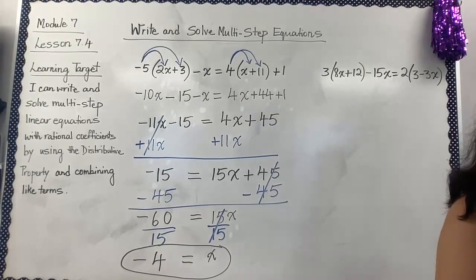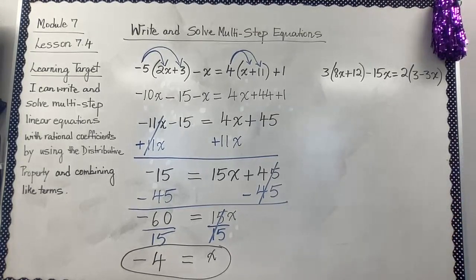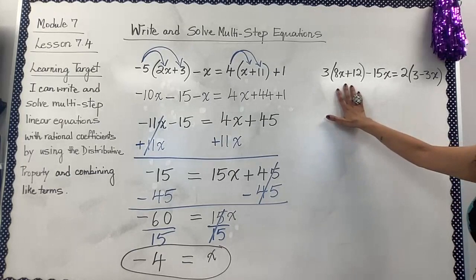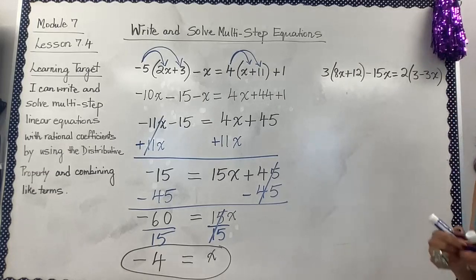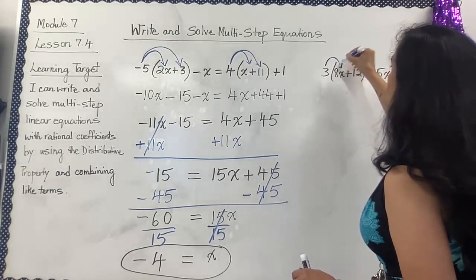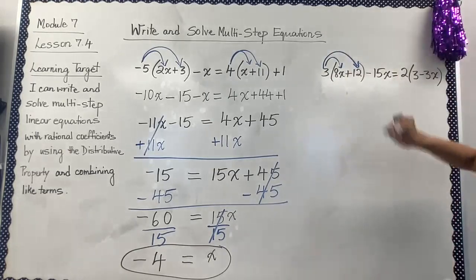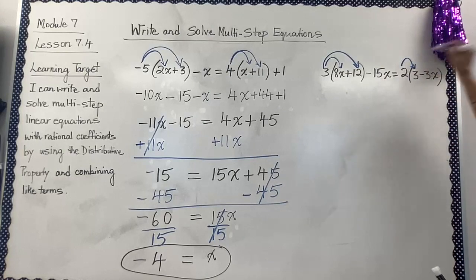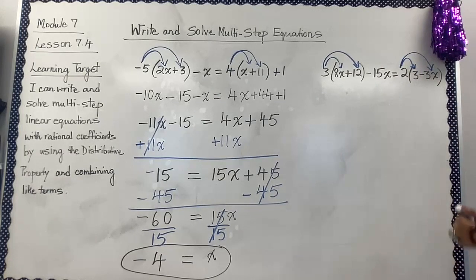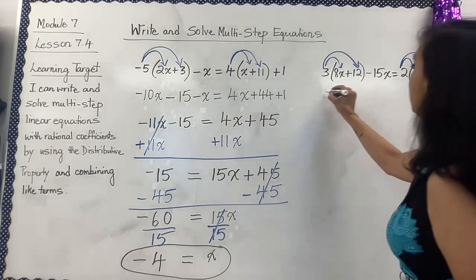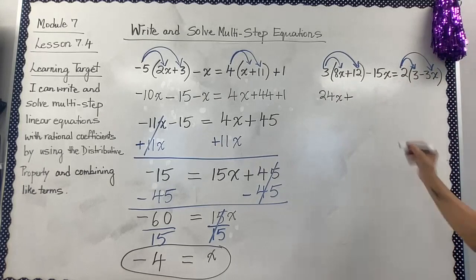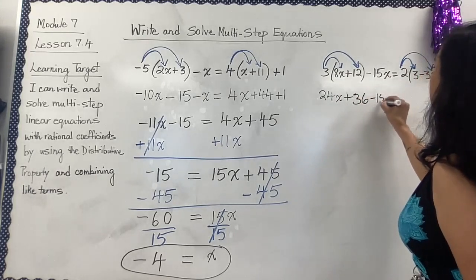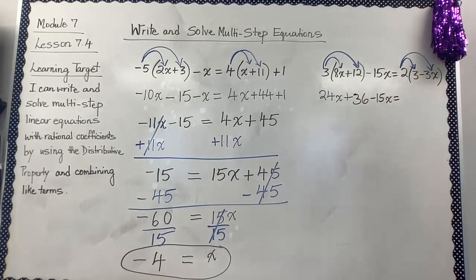Let's do the next question. We have 3 times (8x + 12) minus 15x. Again, this is within parentheses, which means I have to multiply the term outside with each term inside, so we are going to use the distributive property. I'm going to do 3 times 8x plus 3 times 12, and on the other side, 2 times 3 minus 2 times 3x.